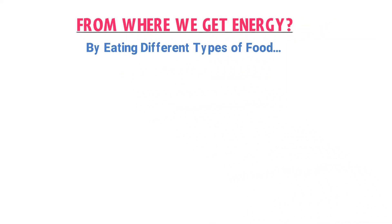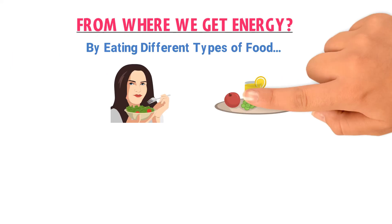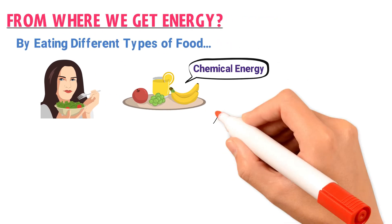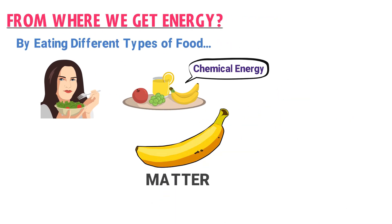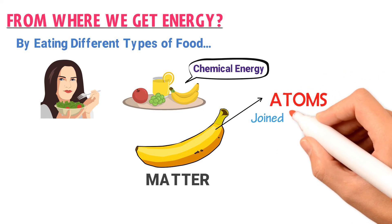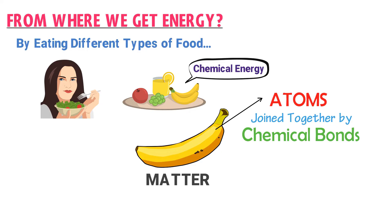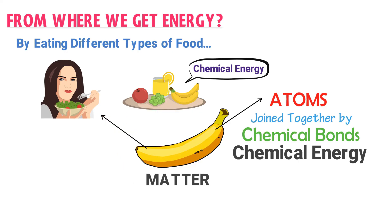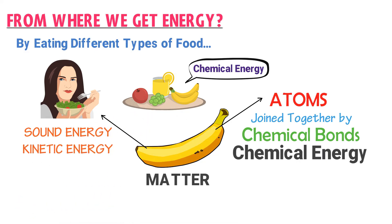The answer is simple — we get energy by eating different types of food, such as vegetables and fruits. The fruits and vegetables we eat contain chemical energy. Let's consider you eat a banana. Banana is matter, because it is made up of millions of atoms like carbon, hydrogen, etc. The atoms of the banana are joined together by chemical bonds, and when there is a chemical bond between any two or more atoms, there exist capsules of chemical energy. Thus, banana possesses chemical energy. Once you digest the banana, you get that chemical energy, and you can convert it into other forms of energy like sound energy, kinetic energy, and potential energy.